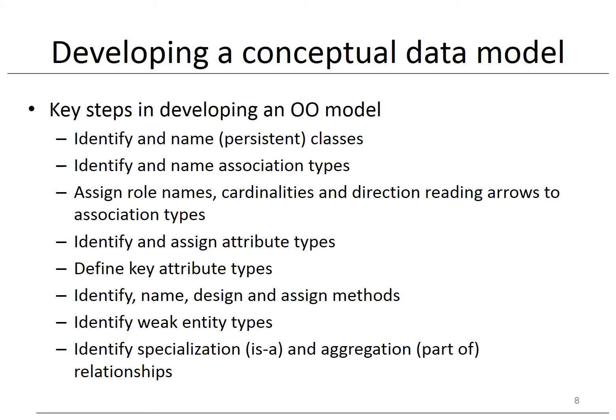The steps to design an OO conceptual model are quite similar to those for an EER model. First, we identify and name the classes and indicate which ones should be made persistent. Next, the association types together with their role names, cardinalities, and direction reading arrows are determined. We then identify the attribute types and assign them to either the classes or association types. Key attribute types are defined. Contrary to the EER model, the OO model allows defining methods, which are identified, named, and assigned next. This is followed by modeling the weak entity types using qualified associations. Finally, the OO model can be enriched with specialization and aggregation constructs where necessary. Also here, additional semantics can be written down as business rules.